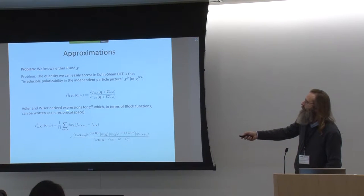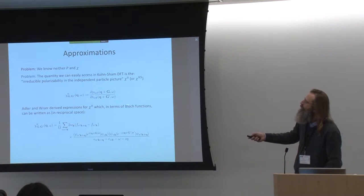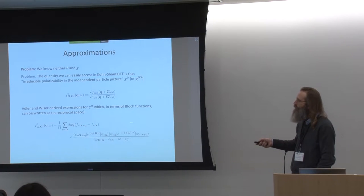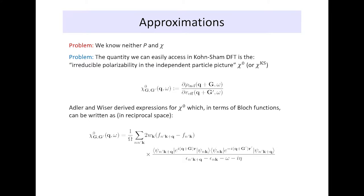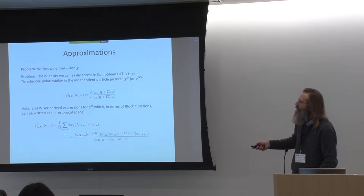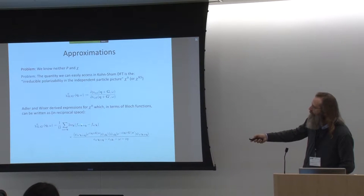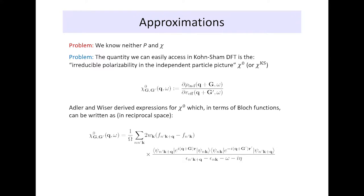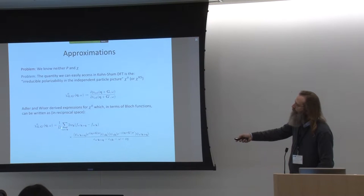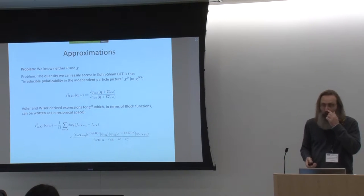Adler and Wiser derived expressions for this, where the only ingredients are things we actually know from our computations: Bloch functions — eigenfunctions of the Kohn-Sham equations — and eigenenergies. We see occupation numbers of our Bloch states: only if one state is occupied and the other is unoccupied does it actually contribute. The sums run over band indices N and N-prime, where one is an occupied band and the other an unoccupied band. This is the first time we see a quantity that depends on unoccupied states, whereas previously everything depended only on occupied states.